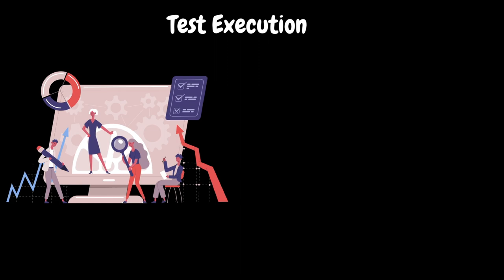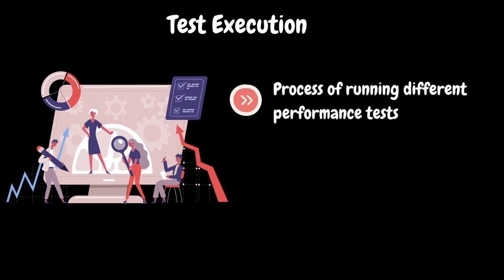What is test execution? In performance testing, test execution refers to the process of running different performance tests on a software application or system to assess its responsiveness, stability, and scalability under various conditions. The primary goal is to identify and address performance bottlenecks and ensure that the application can handle the expected load.